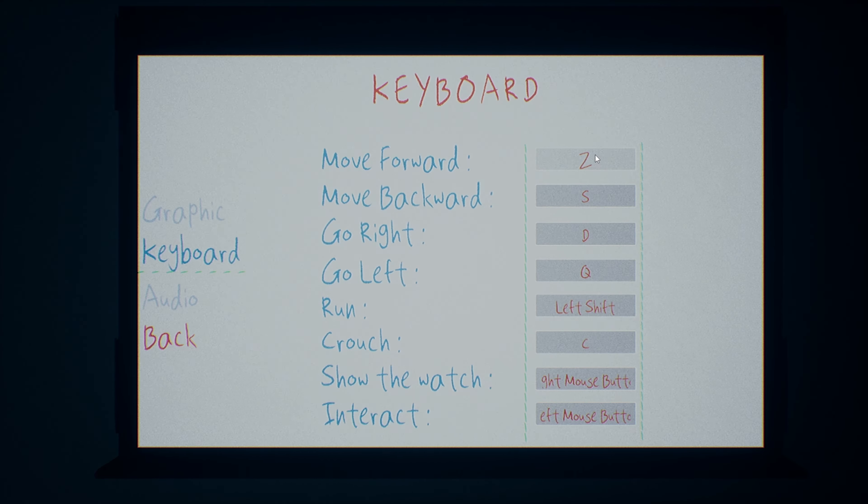So when you're going forward you're pressing the lower key, when you're going backwards you're pressing the upper key. And then you have to reach up to Q to go left and over to D to go right.